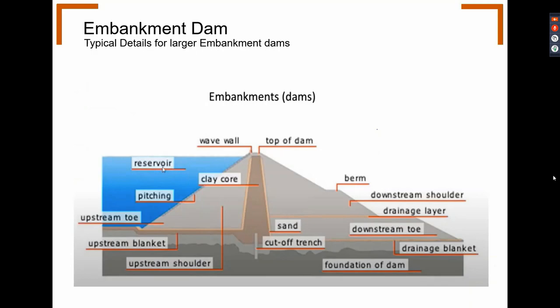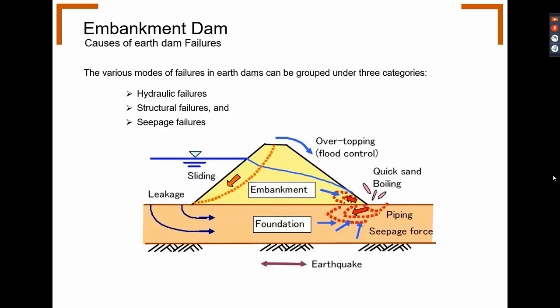Here is the typical embankment dam detail composed of different zones with seepage and stability control aspects such as drains, cut-off trenches, berms, and others. There are various modes of failures in earth dams, grouped into three categories: hydraulic failures, structural failures, and seepage failures.